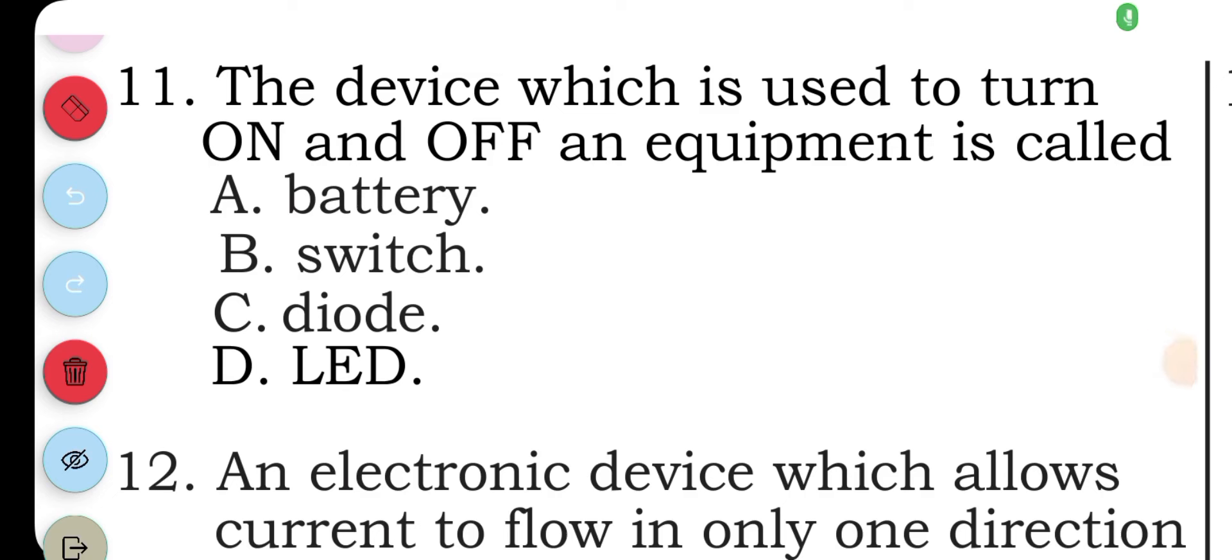Question eleven: the device which is used to turn on and off an equipment is called: A battery, B switch, C diode, D LED. The answer to question eleven is B, switch.